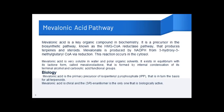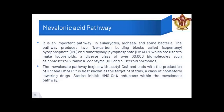Mevalonic acid is soluble in water and cold organic solvents. It exists in equilibrium with its lactone form called mevalonic lactone. Biologically, mevalonic acid is the primary precursor of isopentenyl pyrophosphate (IPP). The mevalonic acid pathway ends where it forms IPP, from where it transforms into different terpenoids. Mevalonic acid is chiral, and only one enantiomer is biologically active. This pathway is present in eukaryotes, archaea, and some bacteria.